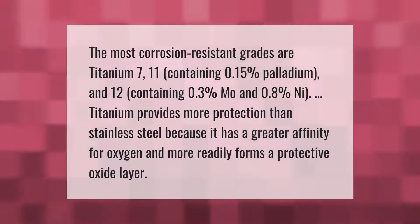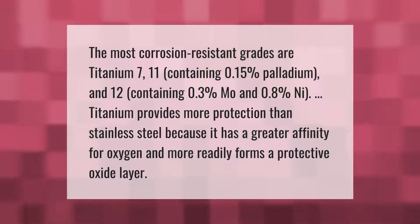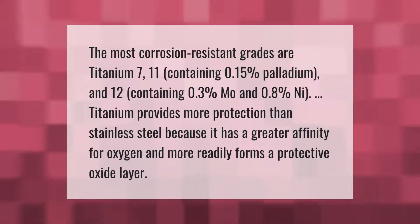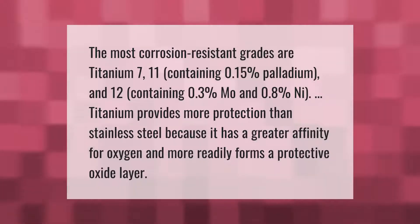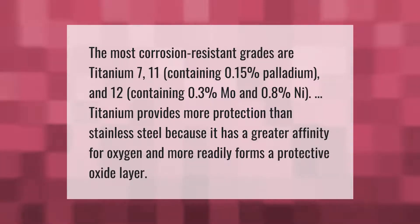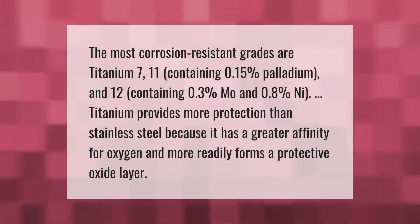The most corrosion resistant grades are titanium 7, 11 containing 0.15% palladium, and 12 containing 0.3% molybdenum and 0.8% nickel. Titanium provides more protection than stainless steel because it has a greater affinity for oxygen and more readily forms a protective oxide layer.